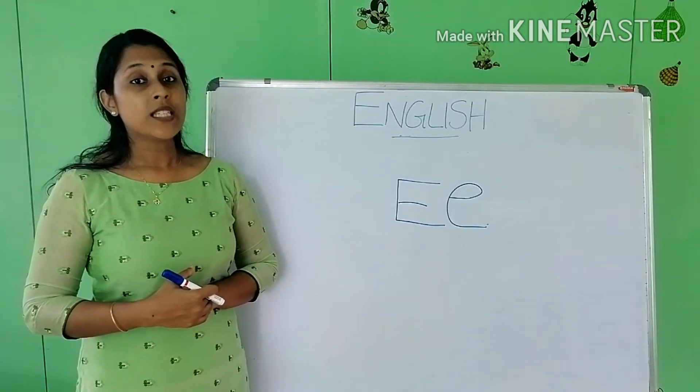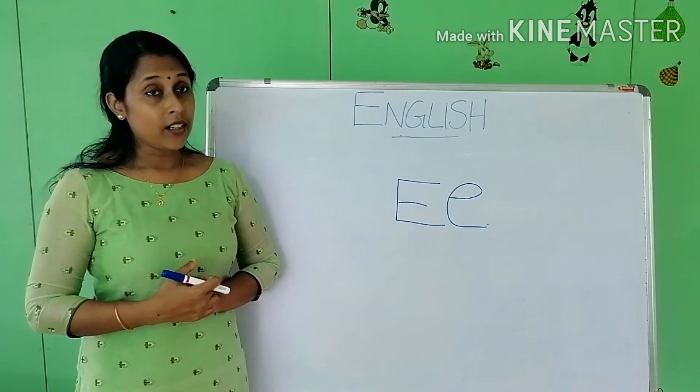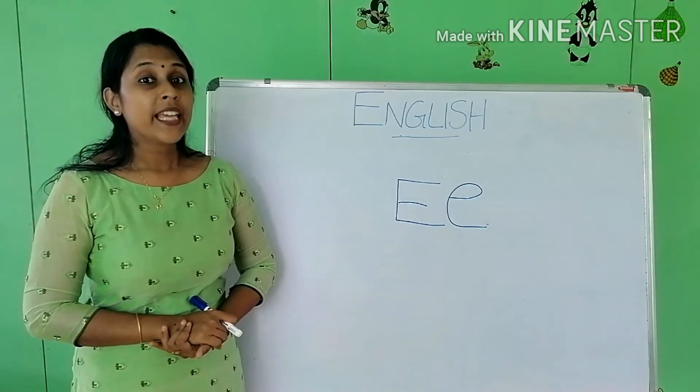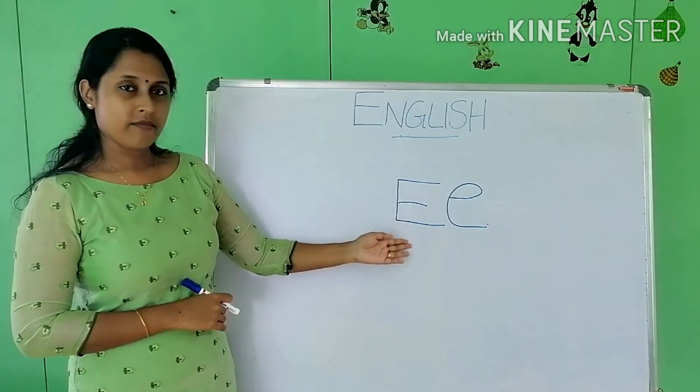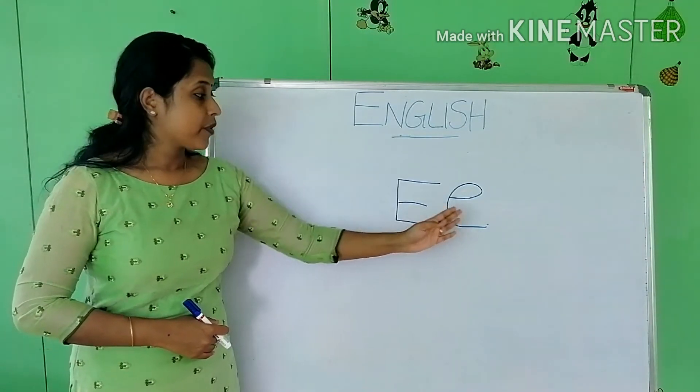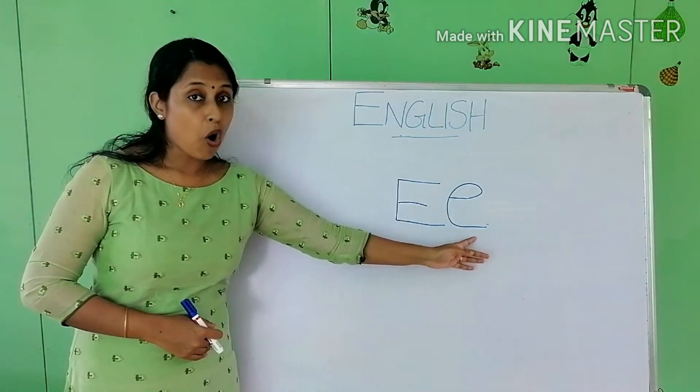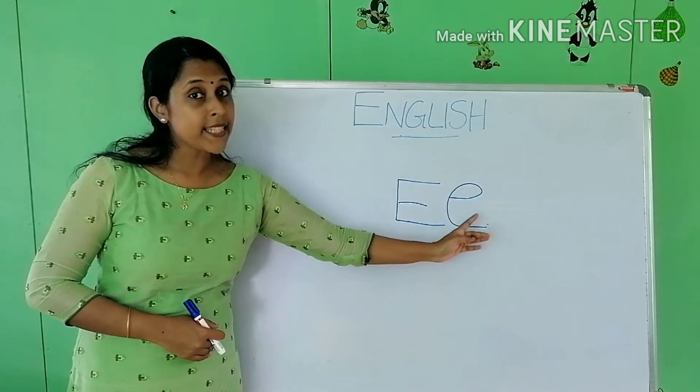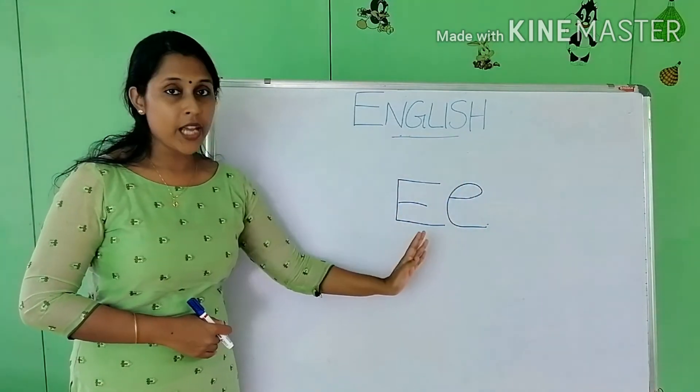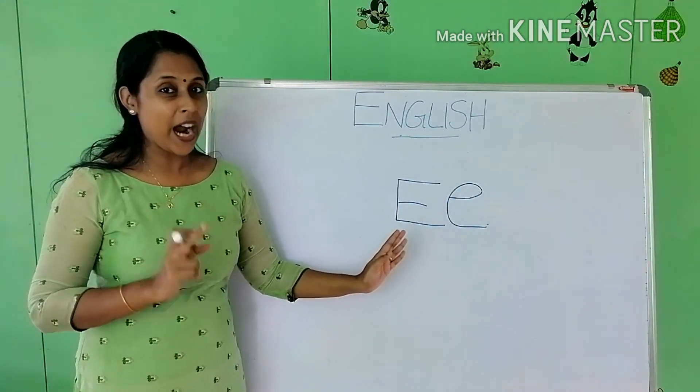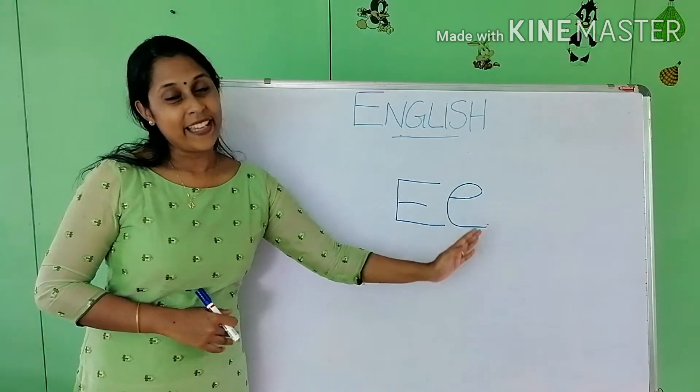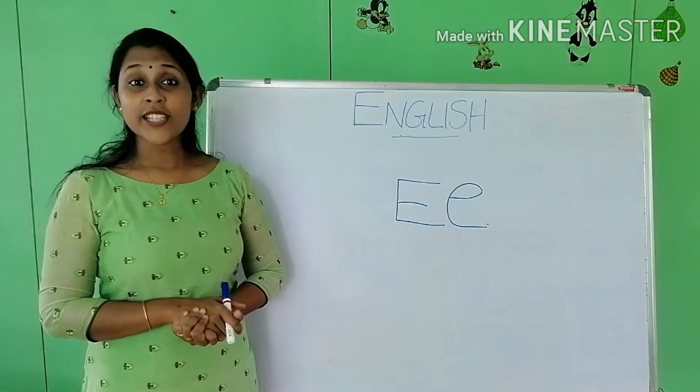Today we are going to study the alphabet E. The alphabet E. This is the uppercase E, capital E. This is the small E, lowercase E. So whenever you see this alphabet you must be able to identify it. This is E, capital E and small E. Do you know the sound of E?